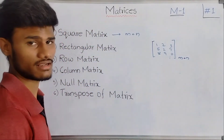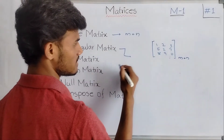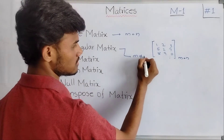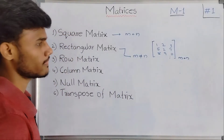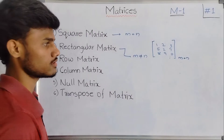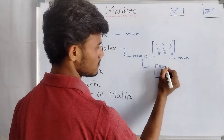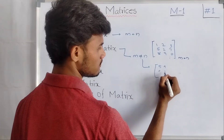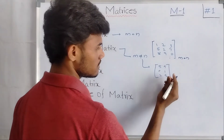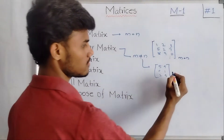Now coming to a rectangular matrix: the number of rows is not equal to the number of columns, that is M not equals to N. For example, a matrix like 5, 9, 0, 1, 2, 5 — this type of matrix, where M is not equal to N, is called a rectangular matrix.